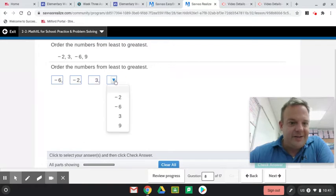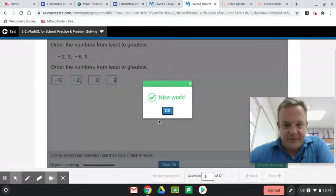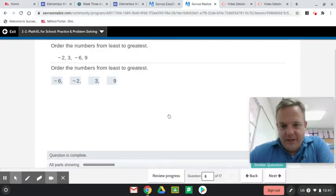So the least would be negative 6 followed by negative 2 and then 3. A great strategy for this is to make a number line as well. But I'm running out of time, so I'm going to move a little quicker because I don't want to do a two-parter here.